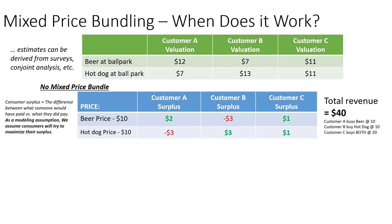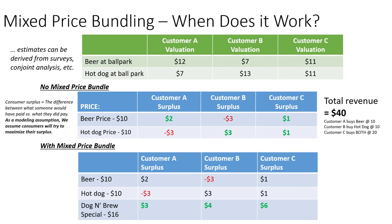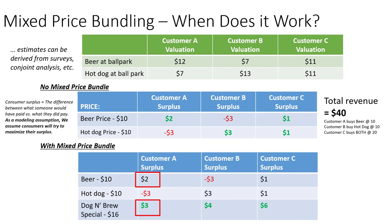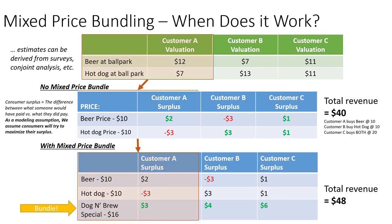Now let's consider the same customers and valuations, but this time with a mixed price bundle — a 'dog and brew special' for $16. Customer A actually purchases the bundle because the surplus is $3, which is greater than the surplus from just buying the beer. Customer C buys the bundle too — they were going to buy both anyway, but now they save money. We're also happy because our total revenue in this scenario is $48. The bundling enticed people to buy products they otherwise would not have purchased.